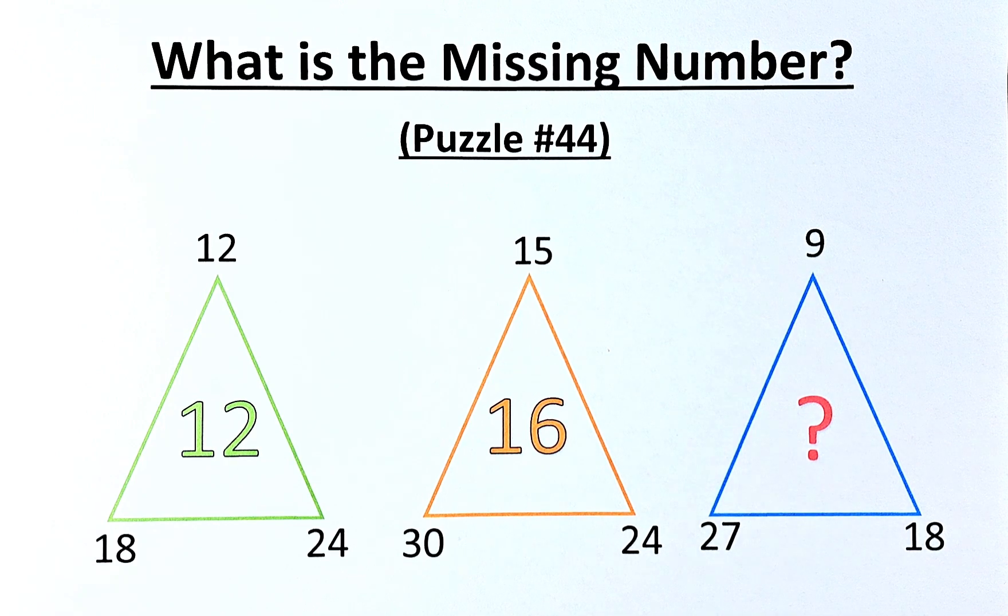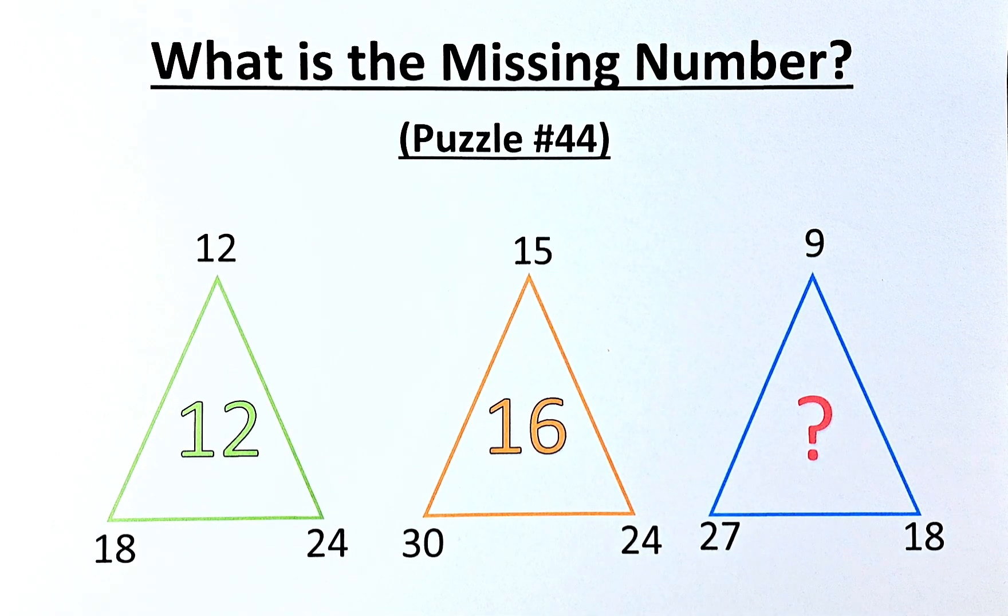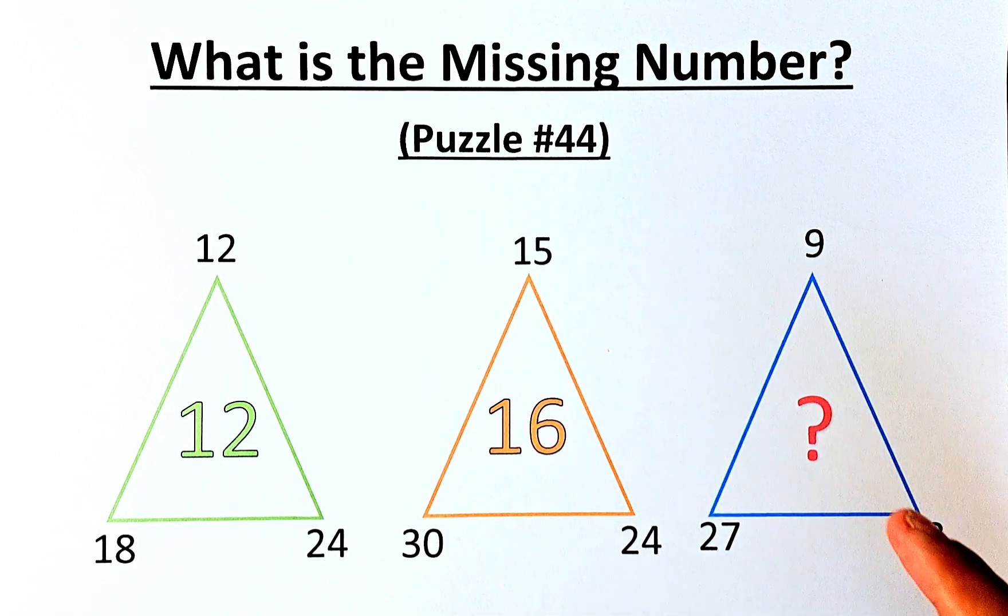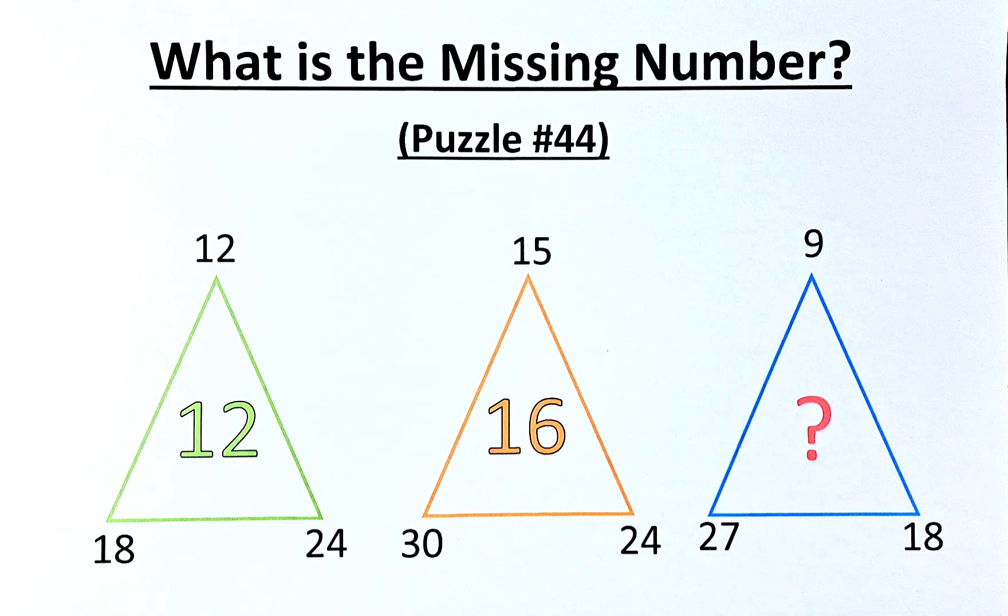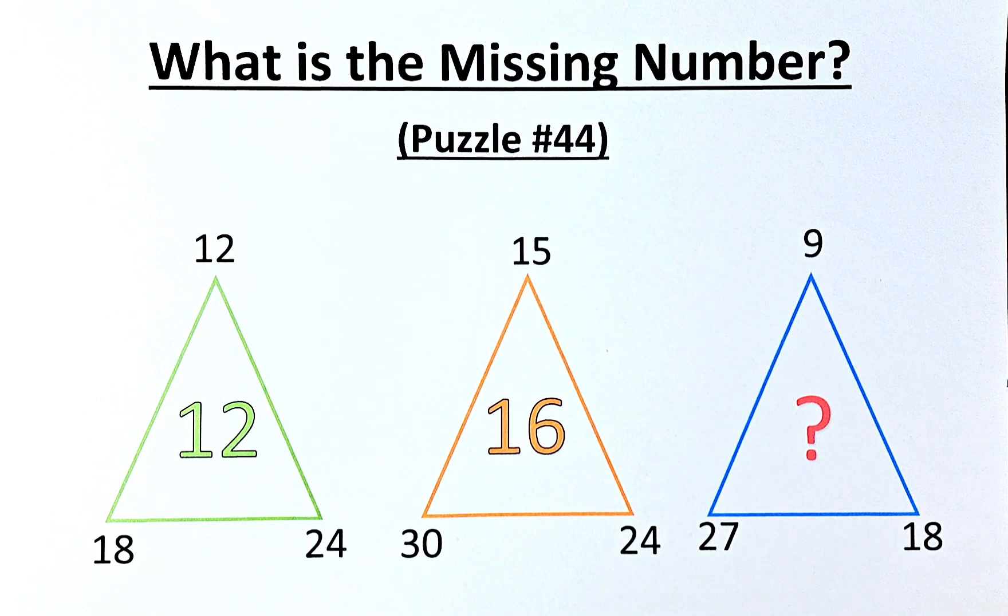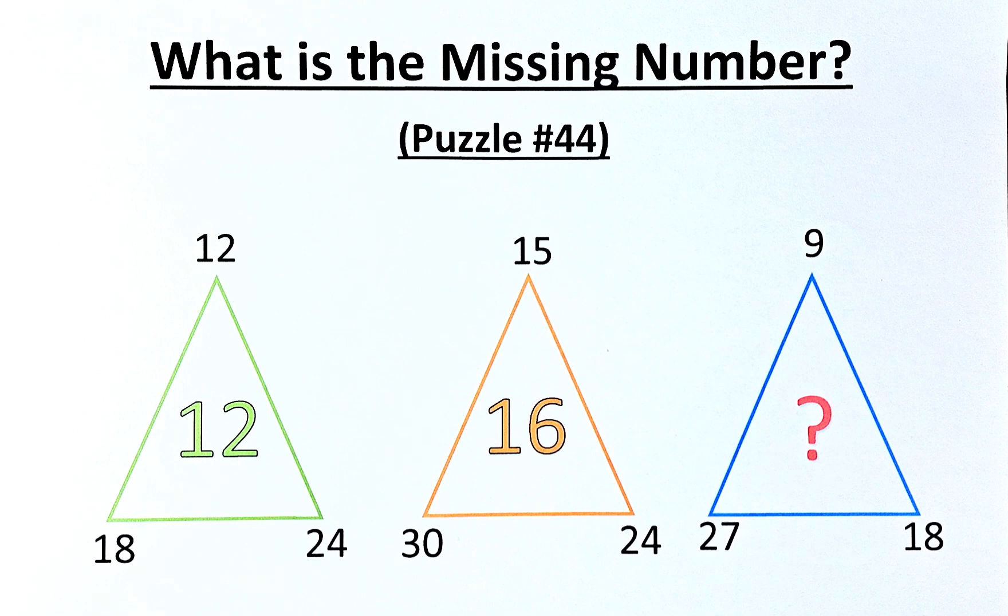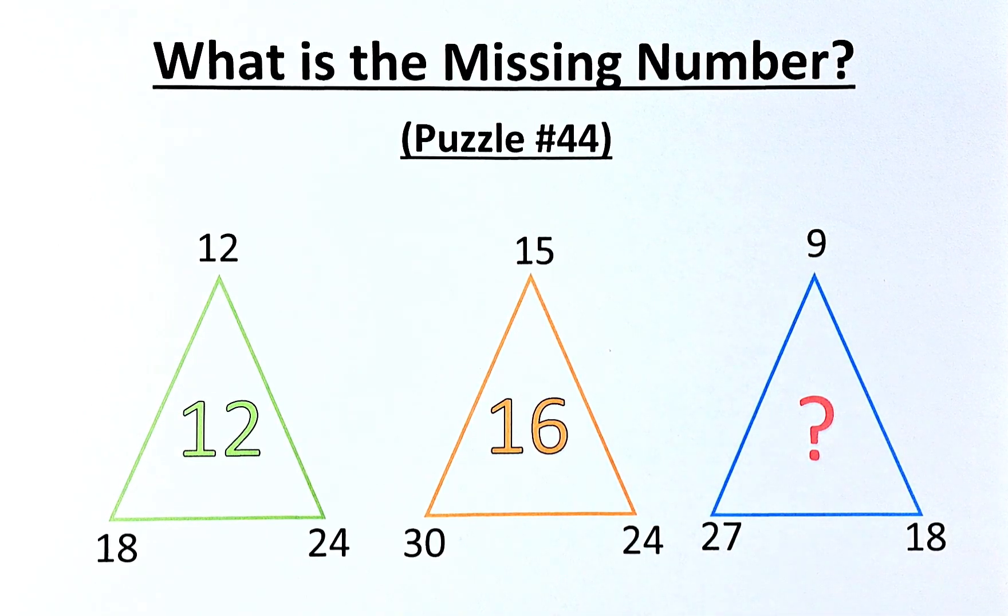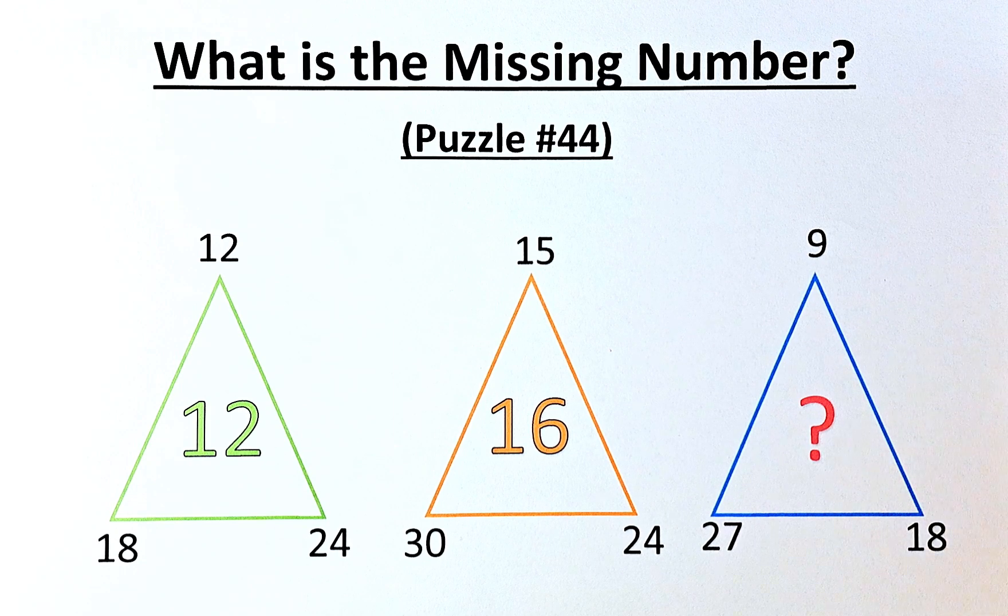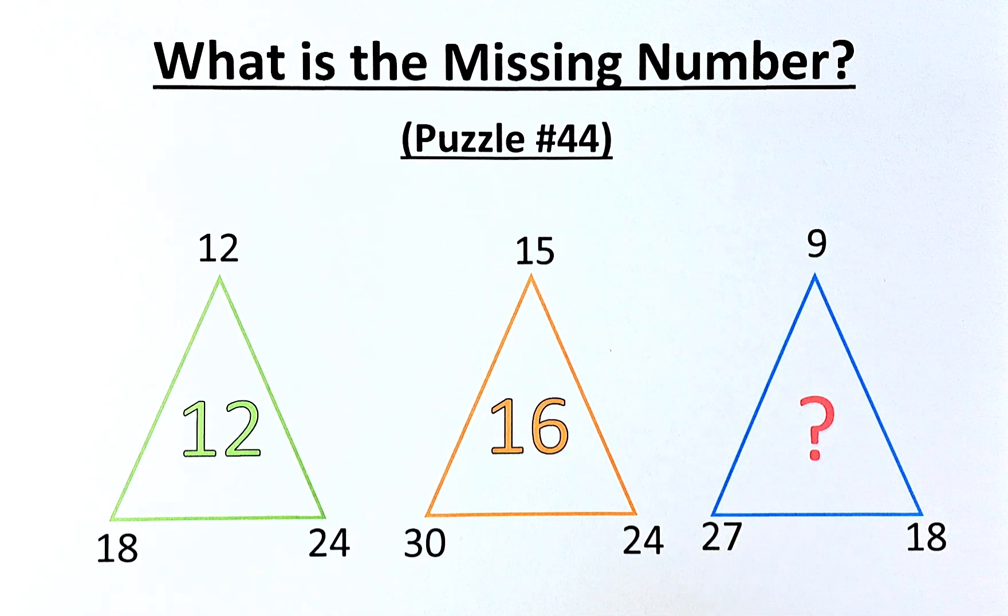Welcome back to the solution of puzzle number 44. What is the missing number in this puzzle? The numbers in the puzzles are 12, 18, 24 and 12 in the first triangle; 15, 30, 24 and 16 in the second triangle; and 9, 27, 18 and the question mark in the last triangle. So without further ado, let's solve this if you have not done so.